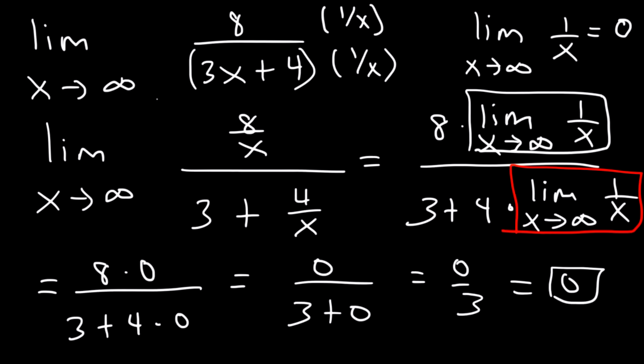Anytime the function is bottom-heavy — notice that the degree of the denominator is greater than that of the numerator — anytime it's bottom-heavy, it's going to equal 0.